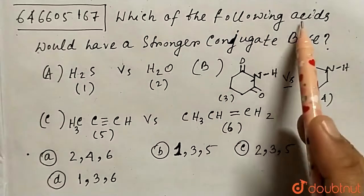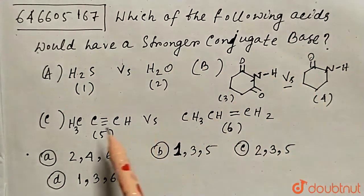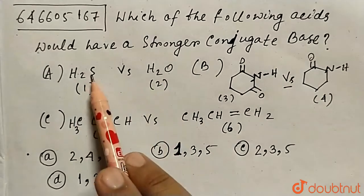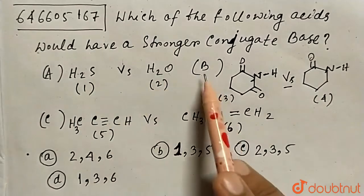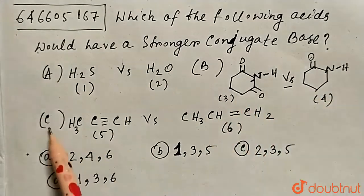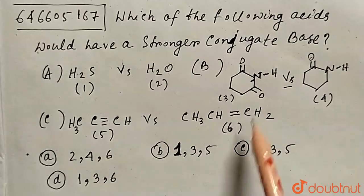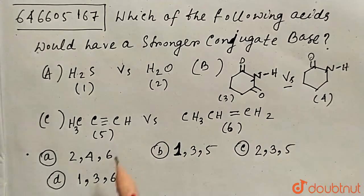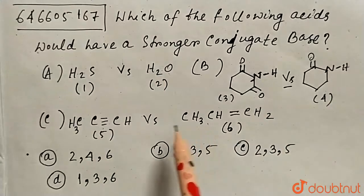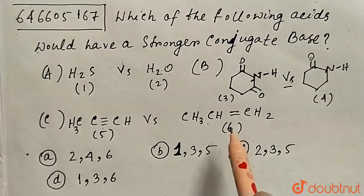The question given is: which of the following acids would have a stronger conjugate base? Some structures are given. H₂O and H₂S are compounds one and two. Pair B has two structures: three and four. Pair C has an alkyne and an alkene as five and six. We have to determine which of each pair has the stronger conjugate base.